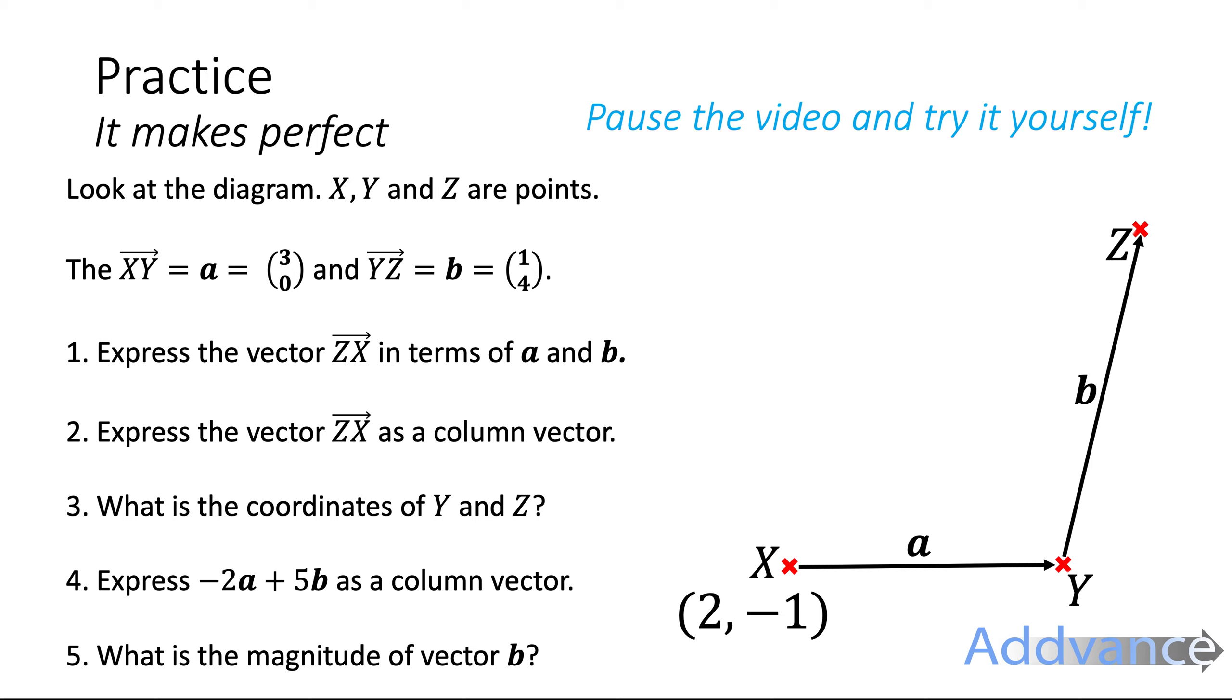Express minus 2a plus 5b as a column vector. Again just do vector algebra with that. And then what is the magnitude of b? So that's Pythagorean theorem. So I think you can pause the video now and try this yourself.